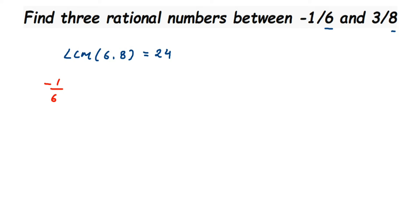This means we are finding an equivalent rational number of minus 1 by 6 where denominator is 24. It's like they are equivalent, so we are gonna multiply or divide. Now since I want 24, so obviously I have to multiply here with a certain number. Now with 6, what number I should multiply to get 24 in the denominator?